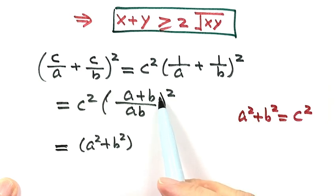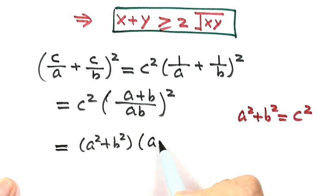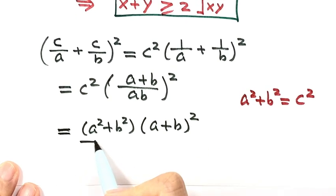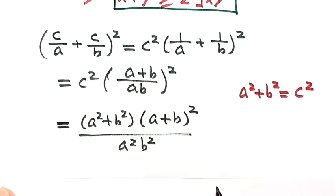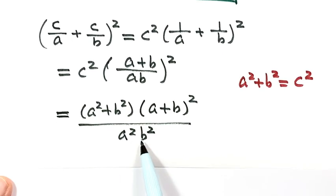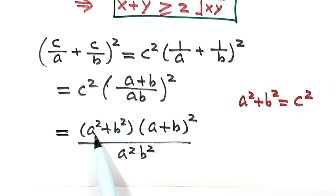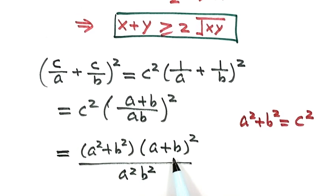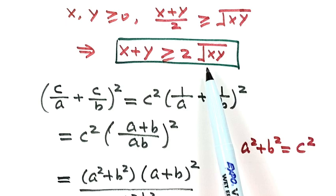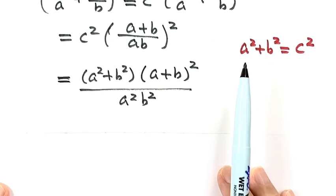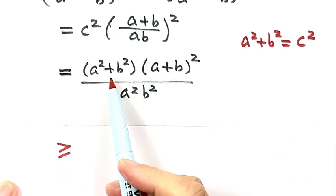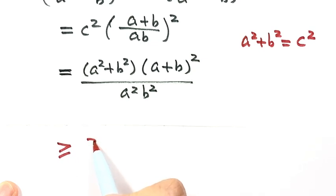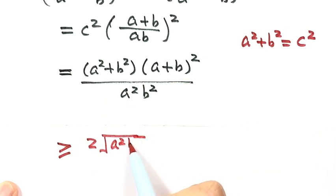Separate the top from the bottom: we have (a² + b²)·(a + b)² on top, divided by a²b² on the bottom. Because a and b are both greater than zero, the bottom is greater than zero. Now for this expression, both the (a² + b²) part and the (a + b)² part can use the AM-GM inequality. So this is bigger than or equal to 2√(a²·b²) for the first factor.